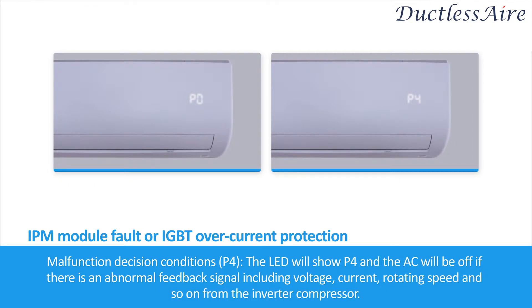Malfunction decision condition for P4: the LED will show P4 and the air conditioner will be off if there is an abnormal feedback signal — including voltage, currents, rotating speed, and so on — from the inverter compressor.